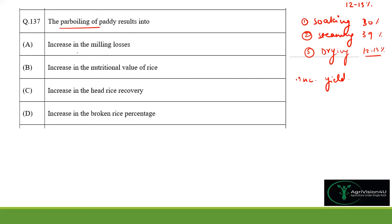Option A — that it increases milling losses — is incorrect because the basic purpose of parboiling is to increase yield and decrease milling losses. Option B — increase in nutritional value of rice — is correct because water-soluble vitamins from the husk and bran move with water into the interior endosperm of the rice.